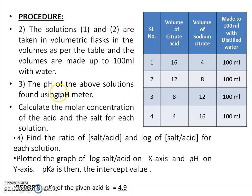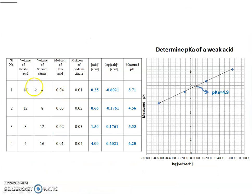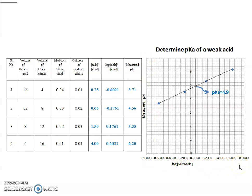Here is the table summarizing the data: volume of citric acid taken, volume of sodium citrate, molar concentration of citric acid, molar concentration of sodium citrate, salt concentration divided by acid concentration, log of salt by acid, and the measured pH for all four solutions using the pH meter. Then plot the measured pH on the y-axis and log(salt/acid) on the x-axis and draw the graph.